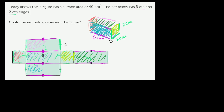But let's go back to the original question: is this figure's surface area 40 square centimeters? The net lays out all of the surfaces for us — we just figure out the surface area of each section and add them together. This one here is 5 centimeters times 2 centimeters, so 10 square centimeters. Same for this one — 5 by 2. This one is 5 by 2, and so is this one — each 10 square centimeters.